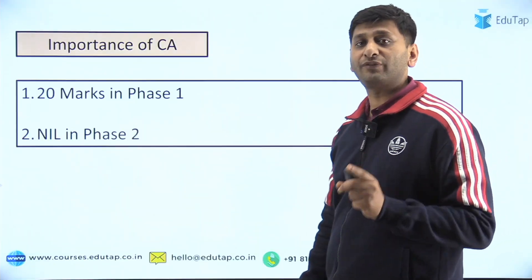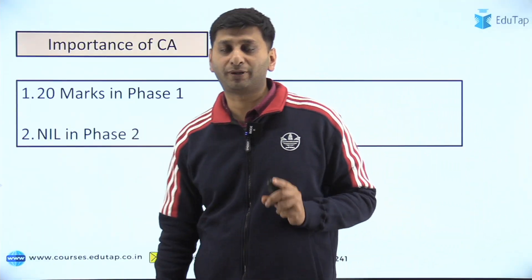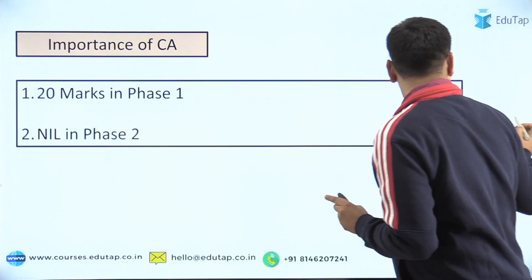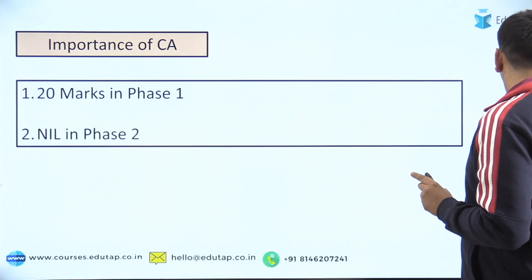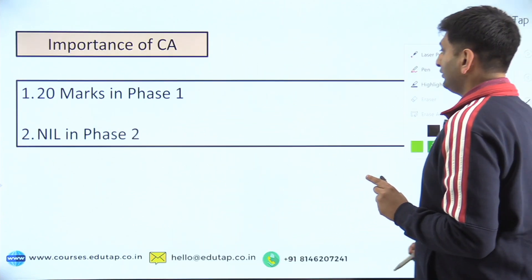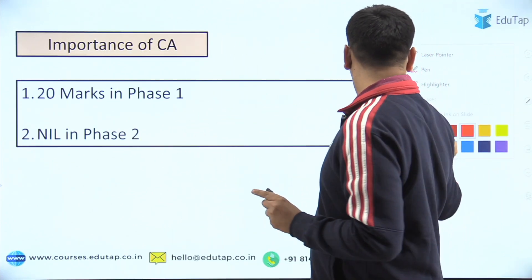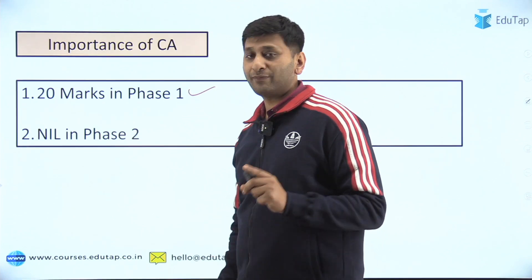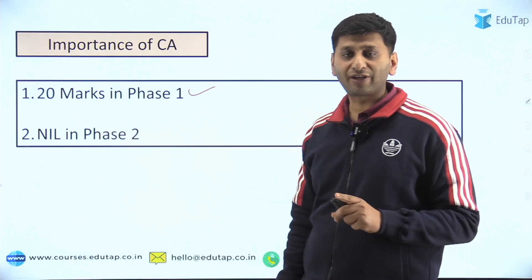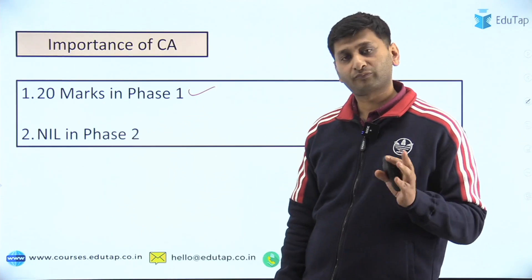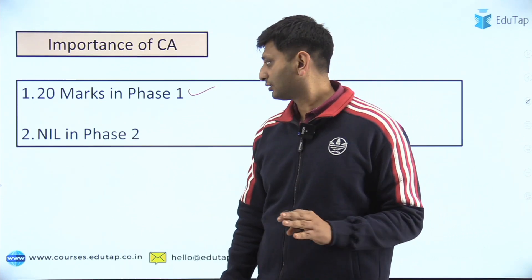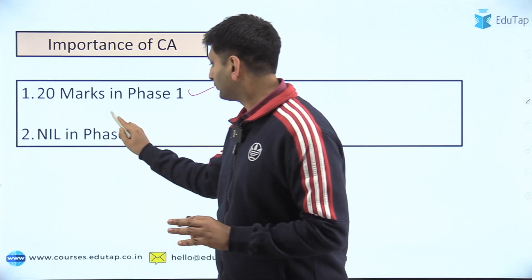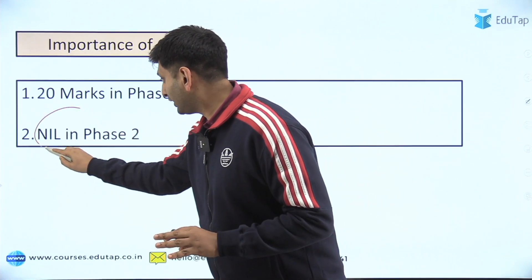Now, what is the importance of current affairs in SEBI? In phase one, 20 marks of GA is asked. We know that. But then in phase two, it is almost nil.